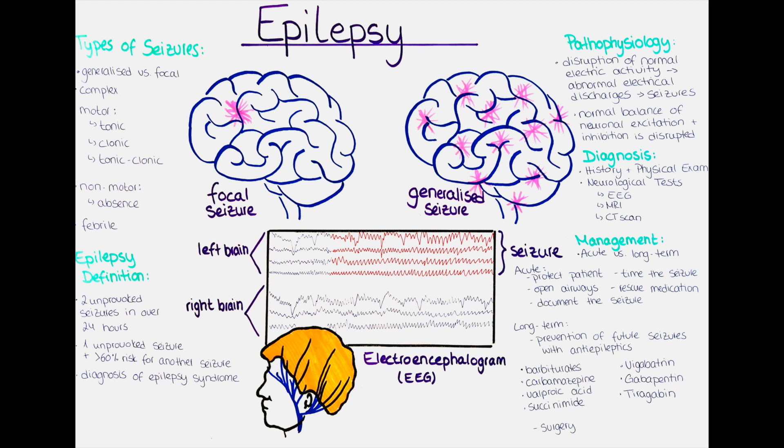In a tonic seizure, the muscles of the body become tense, while in a clonic seizure the muscles of the body become relaxed. In a tonic-clonic seizure, there is an interchanging between those types.